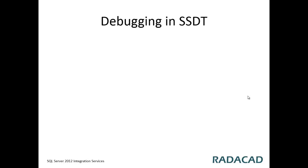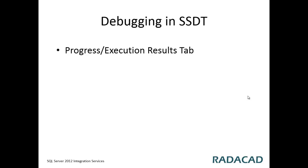In previous videos you learned what an SSIS package is and what control flow tasks are, and how we can use control flow tasks and containers to perform different operations. But during these operations you might get some failures and errors that you need to debug and troubleshoot.